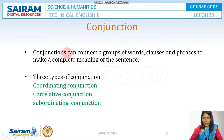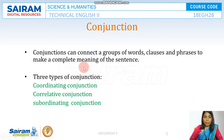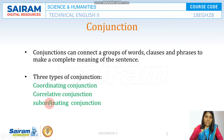Conjunctions are otherwise called as connectors. Conjunctions can connect a group of words, or conjunctions can connect words, clauses and phrases in order to make a complete meaning of the sentence. There are three types of conjunctions: coordinating conjunction, co-relative conjunction, and subordinating conjunction.